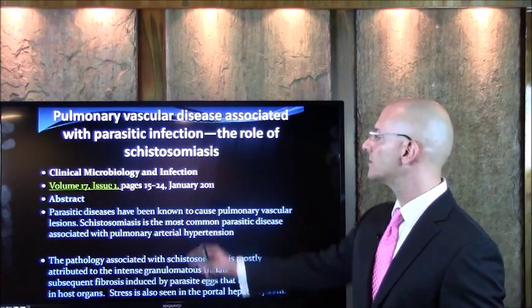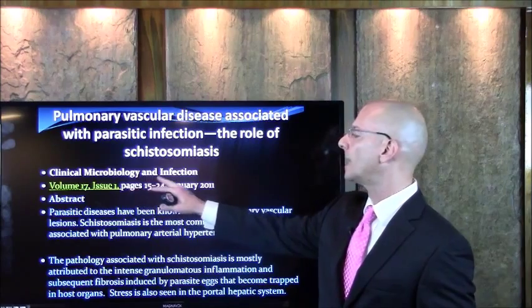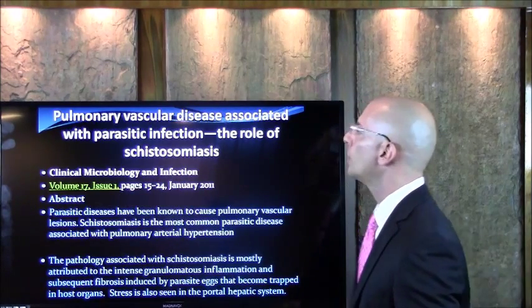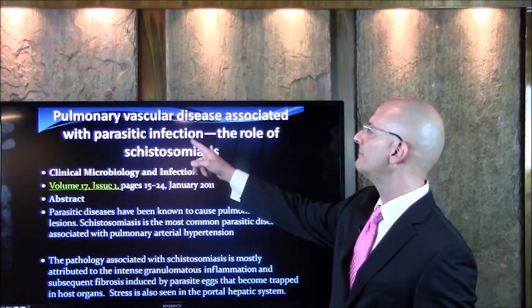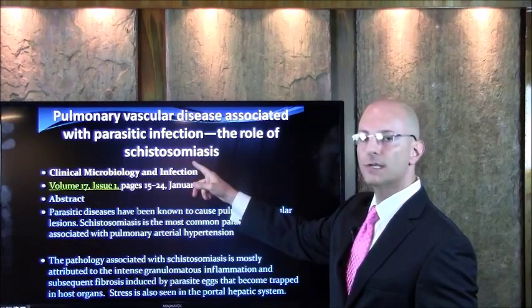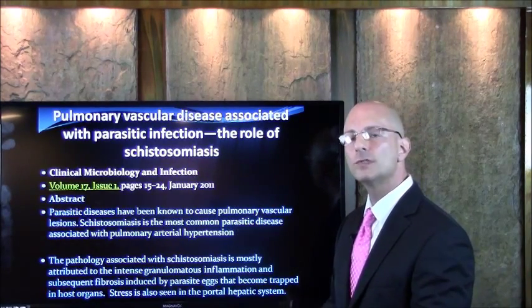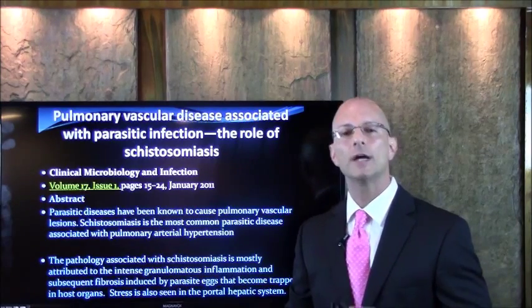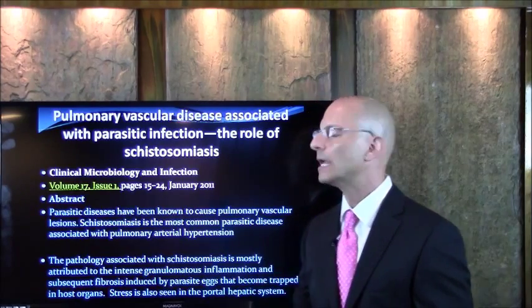Let's look at this research paper. This is from January of 2011, Clinical Microbiology and Infection, Volume 17. The title is 'Pulmonary vascular disease associated with parasitic infection: the role of schistosomiasis.' Schistosomas are parasites. We find flukes in people's tissues. We find helminths. We find parasitic infections, and schistosomas are a kind of parasite.